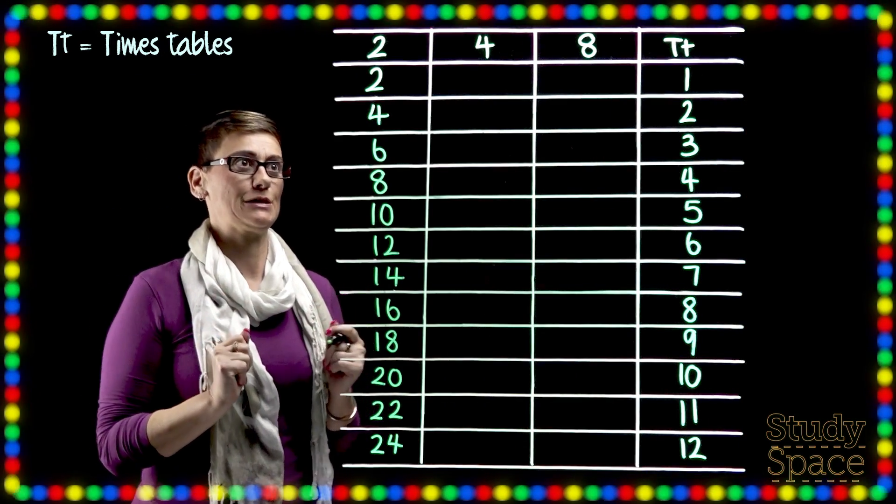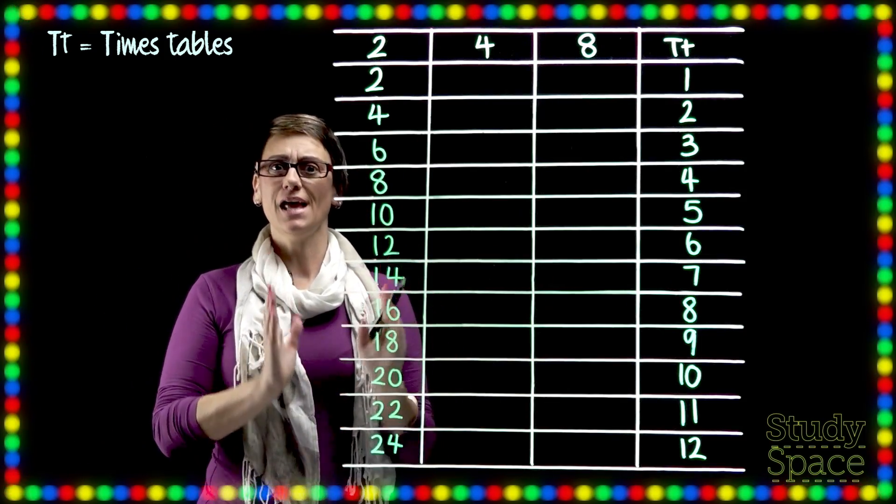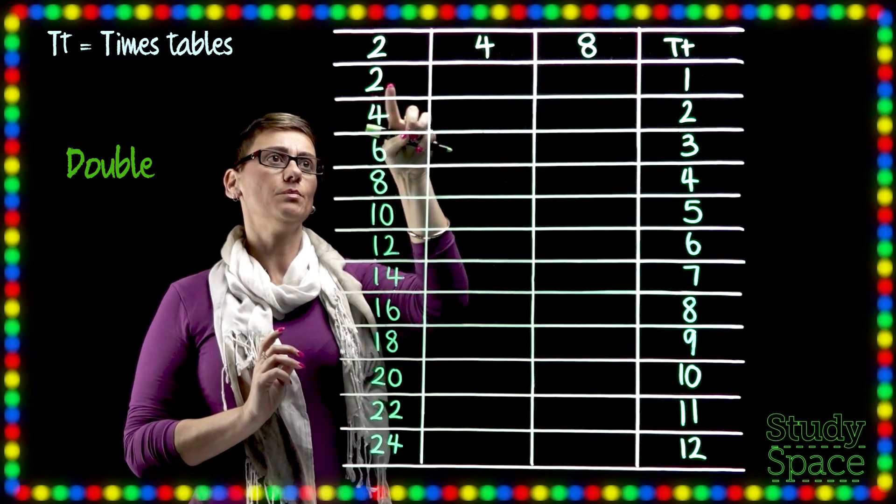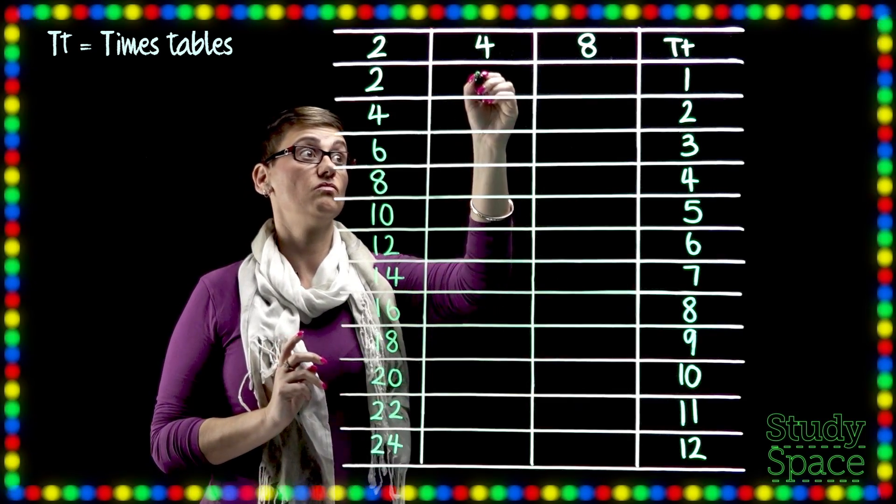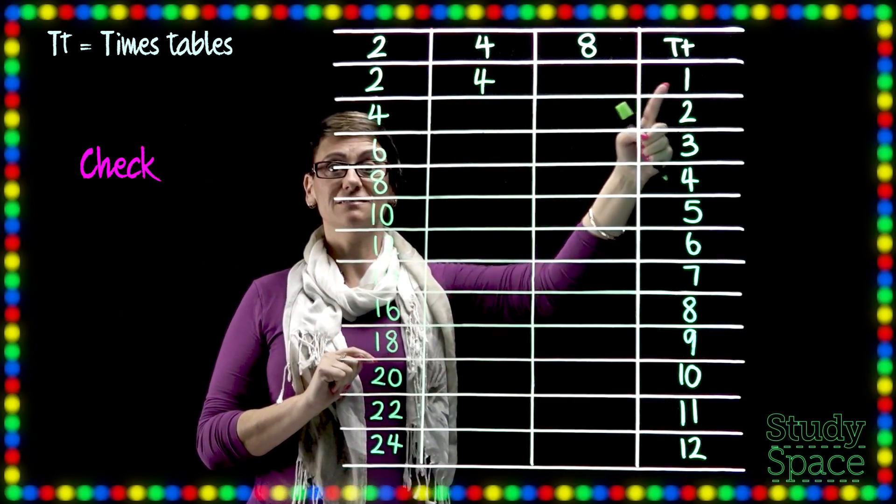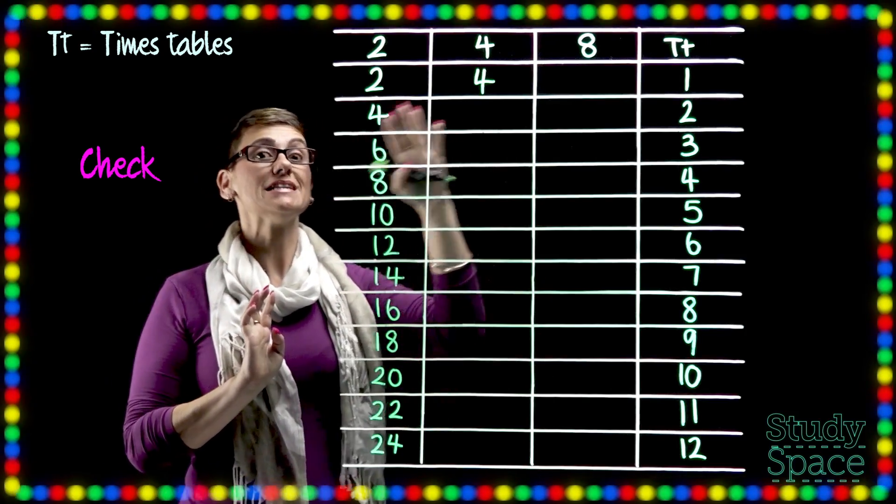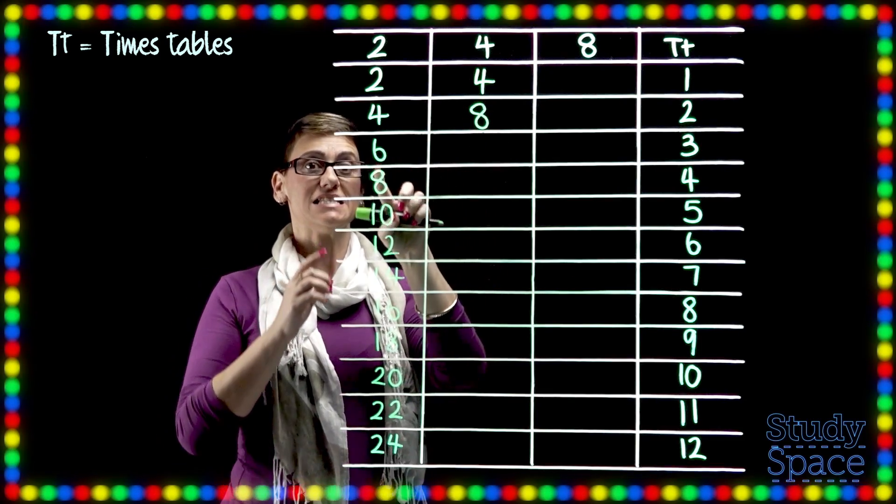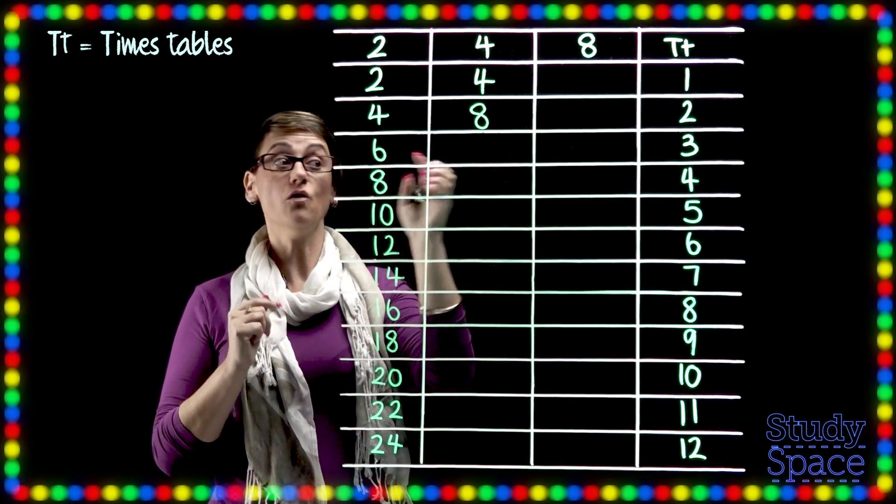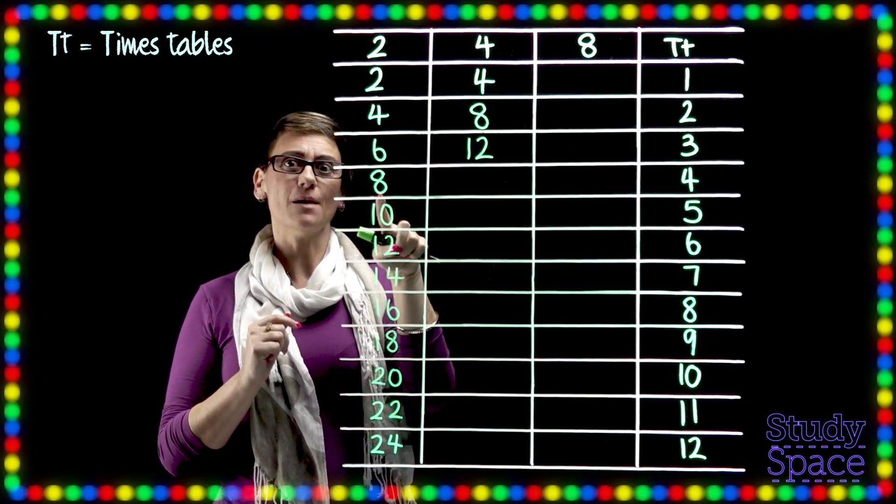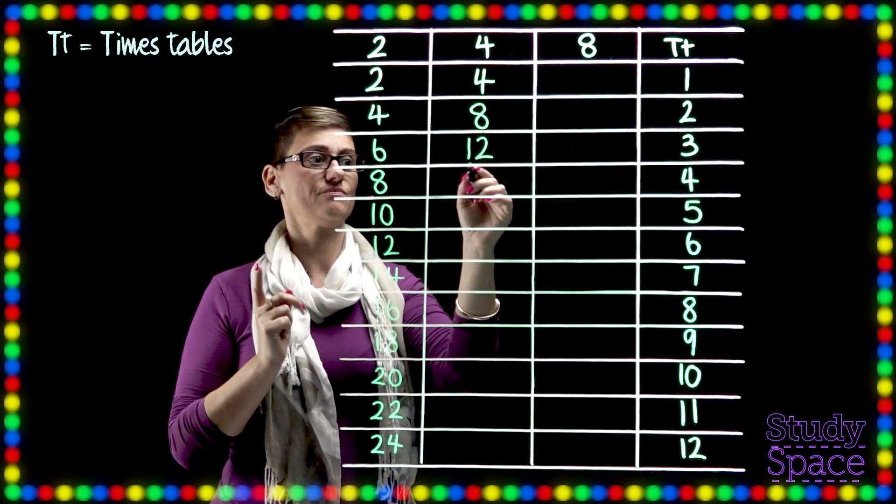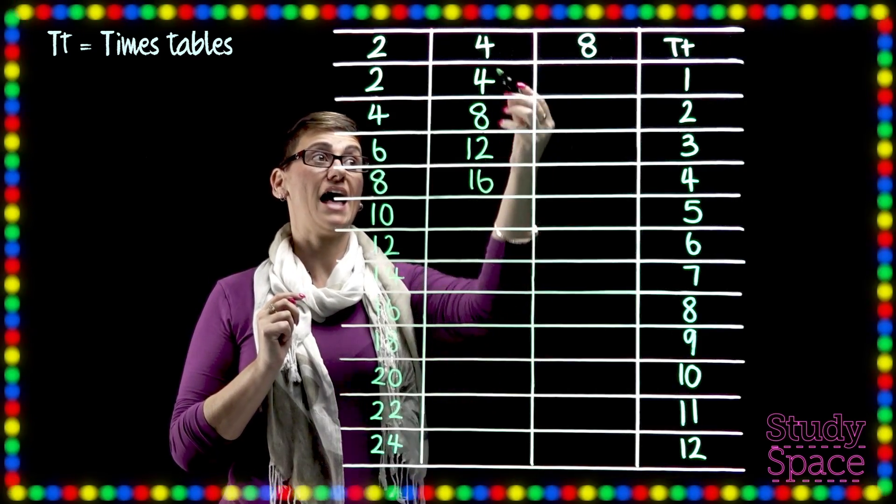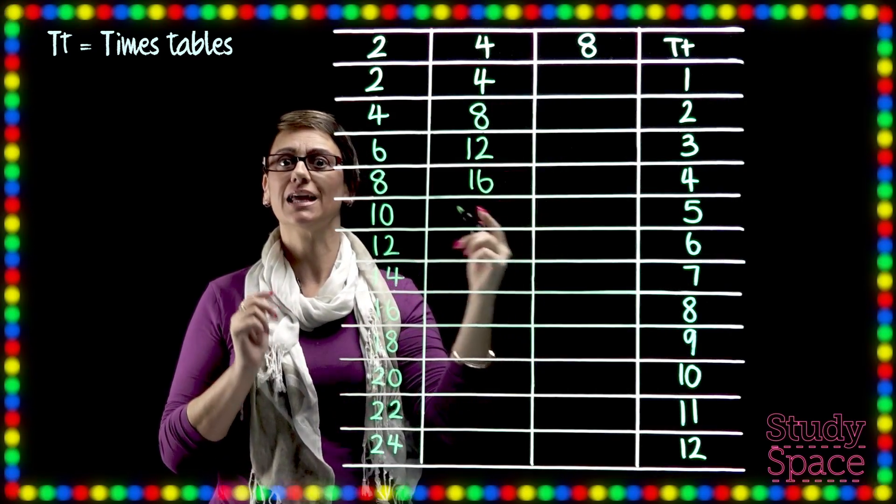Okay so now we need to learn the trick boys and girls. We've done the 2's. So now to get to the 4's we need to double our 2's. Okay so 2 plus 2 equals 4. And just to check 4 times 1 equals 4. So let's keep going. So 4 plus 4 equals 8. 6 plus 6 is 12. Double 8 is 16. So 4 times 4 is 16. And we're adding 4 each time. So there's lots of ways of checking to make sure we're on the right track.